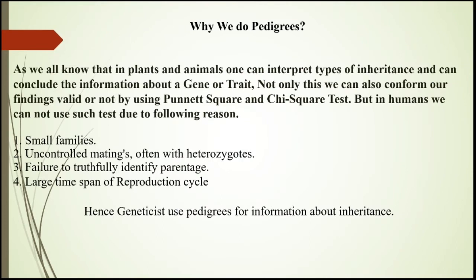As all of you know, in Mendel's experiments, plant breeders or plant geneticists always cross between certain characters — like tall plant with dwarf plant, yellow seed with green seed. In plants, the procedure is to cross one character, two characters, then three characters, after which we prepare a Punnett square and give the ratio of the gene, whether it is 9:3:3:1 or 3:1, or anything like that.